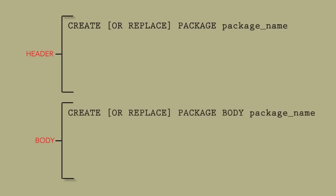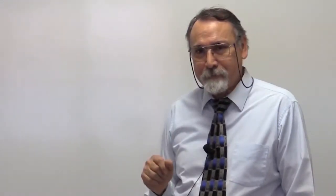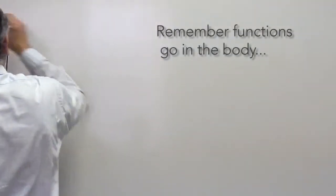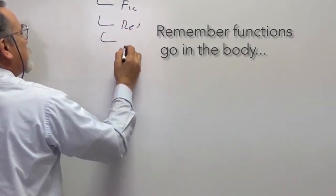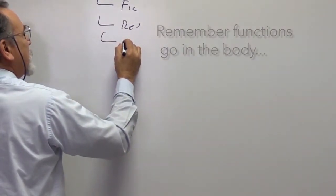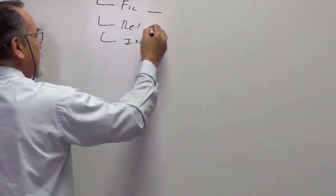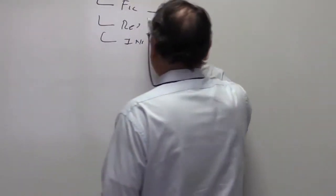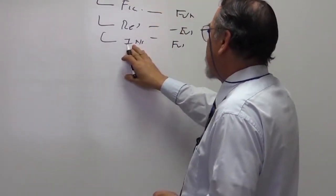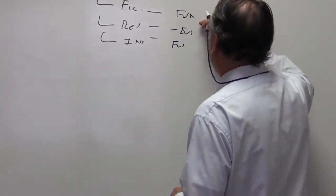The package header portion is basically a list of the sub-programs that will be used in the body. For example, we were talking about benefits — so in here you would say, I'm going to use a program for FICA, I'm going to use one for retirement, I'm going to use one for insurance. Each of these is going to have a function with it: FICA, retirement, insurance — each one has a function.